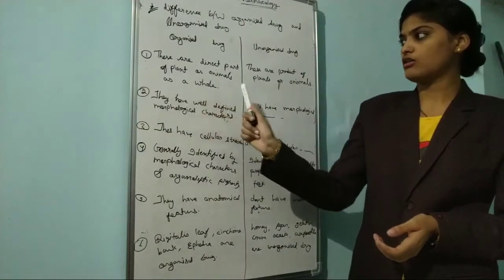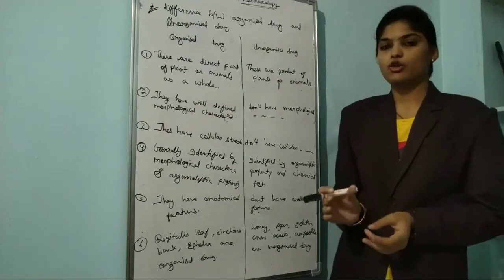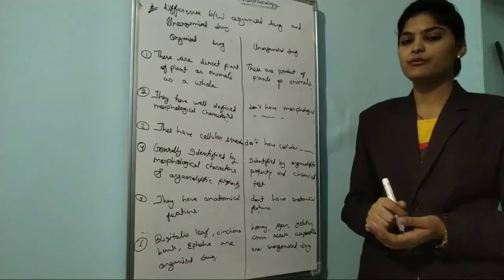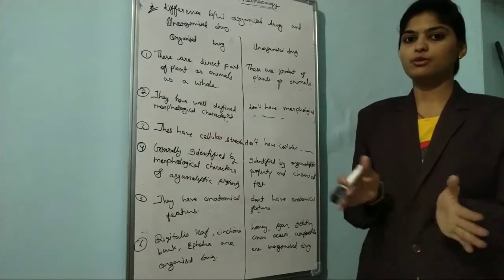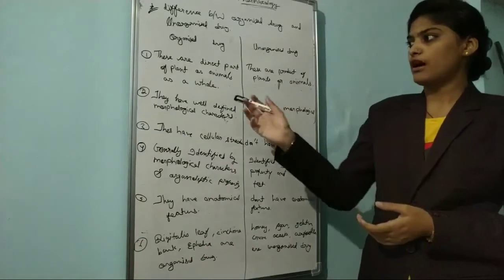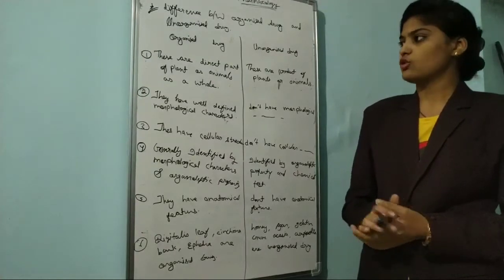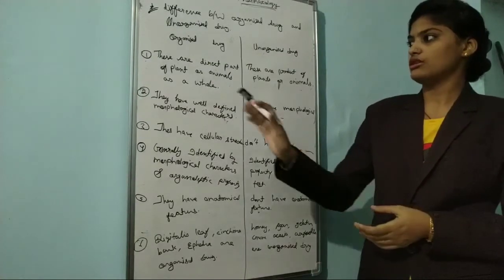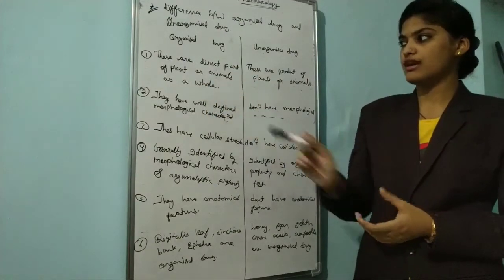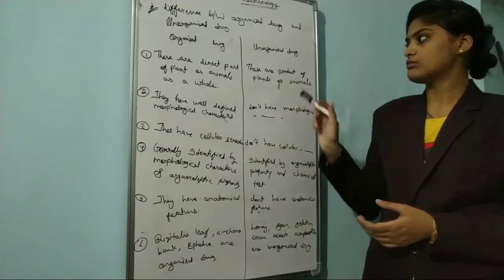The first difference is that organized drugs are direct parts of plant and animals as a whole - like roots, stalk, or leaves that are used directly. The whole plant or plant part is used. Unorganized drugs are products of plants and animals - the product is made.